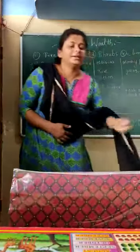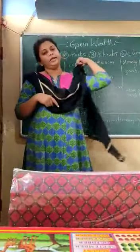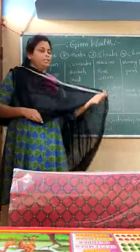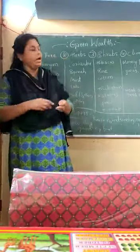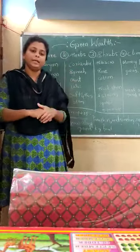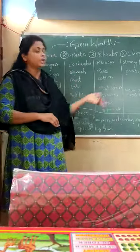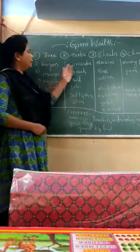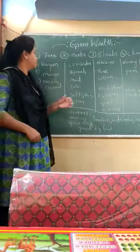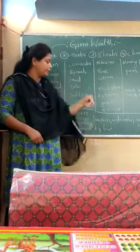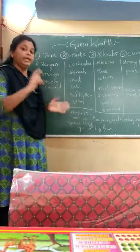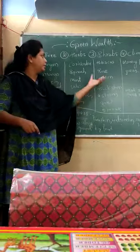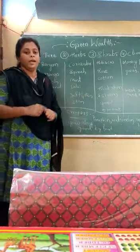Hi children, welcome back. I hope you all are doing well and enjoying these videos. In the last video we discussed about green wealth and how it is divided. We divided it into five types: trees, herbs, shrubs, climbers, and creepers. In the last video we also discussed briefly about trees, herbs, and shrubs.